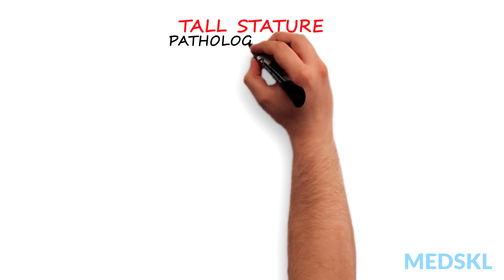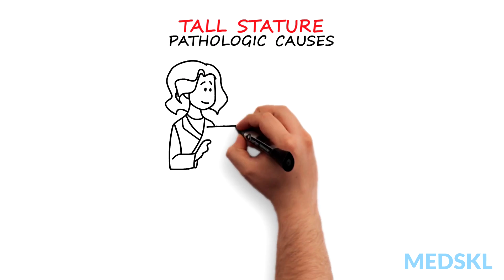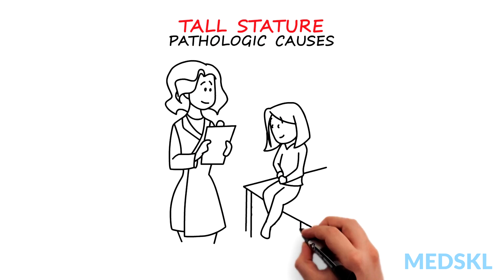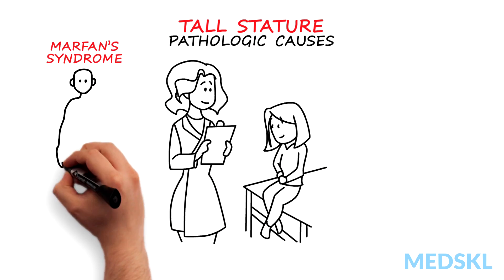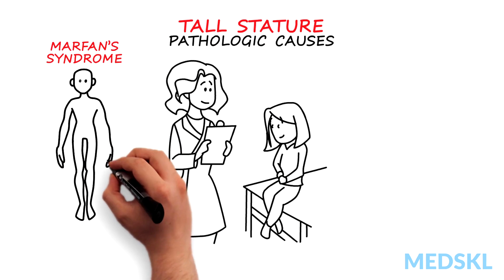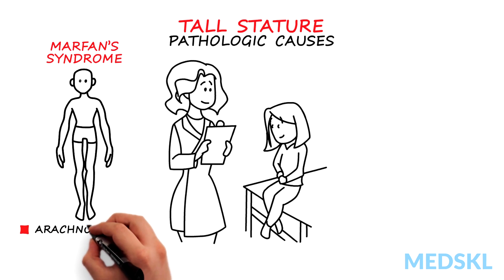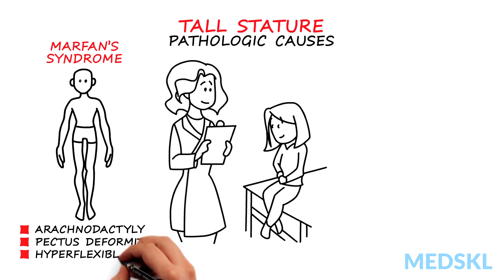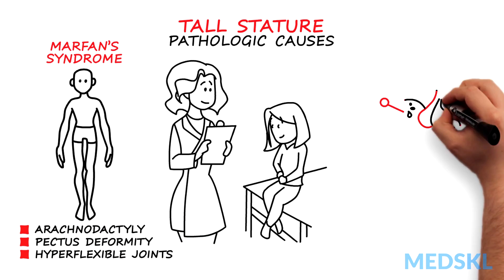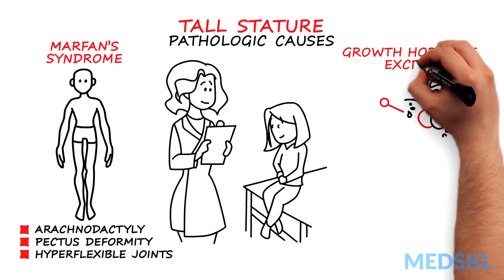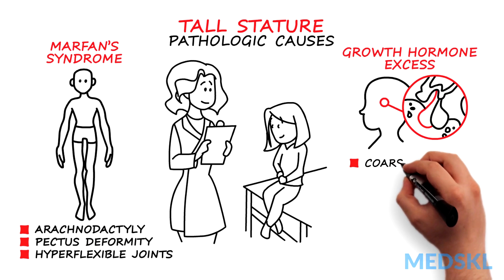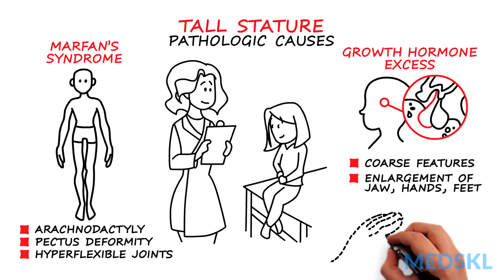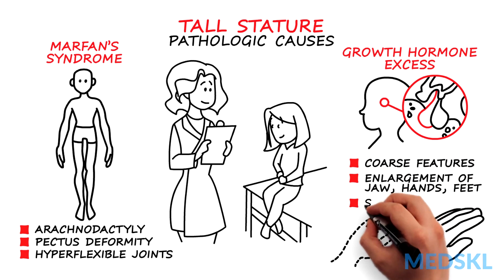The pathologic causes of tall stature often have features seen on physical exam. In Marfan syndrome, the patient may have arachnodactyly, pectus deformity, or hyperflexible joints. Patients with growth hormone excess can have coarse features, enlargement of the jaw, hands, and feet, and skin tags.